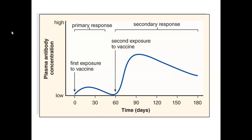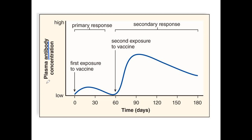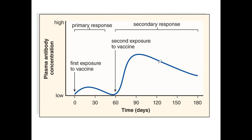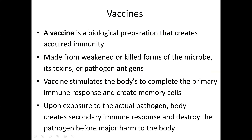Looking at a diagram of plasma antibody concentration: during a primary infection, antibody levels start very low, then grow, then decline — but memory cells remain circulating in your blood. Upon a second exposure, way more plasma antibodies are created, and you have these antibodies and memory cells for longer. This will help you fight the infection much more quickly.